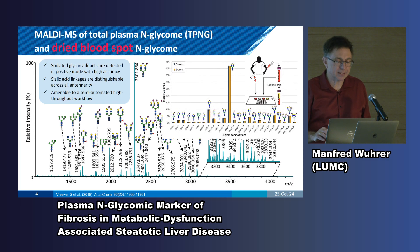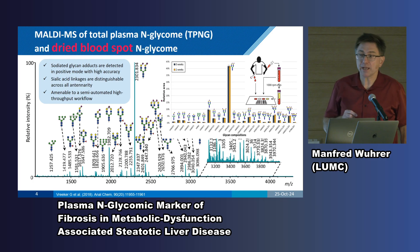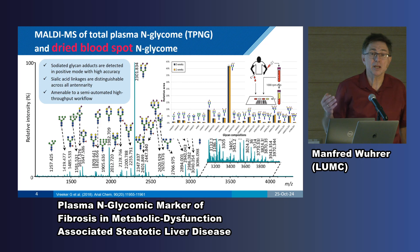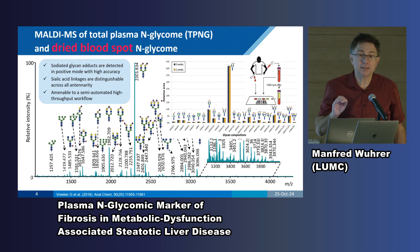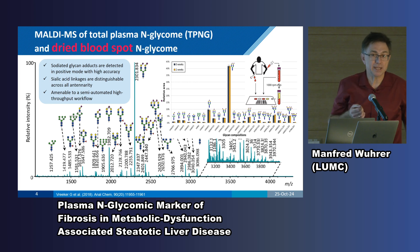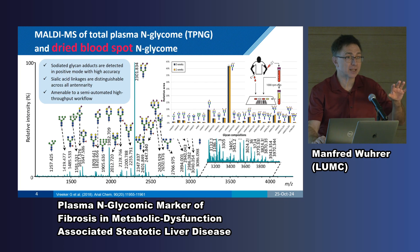One key aspect is we can measure this robustly — we can measure it today and we can measure it tomorrow. Storage of samples is not a big issue: if you store dried blood spots for a couple of weeks at room temperature, you can still release all those glycans and measure them, and the storage time will not affect the glycomic signature. These are very stable and robust signatures which you can gain from serum, plasma, or dried blood spots.